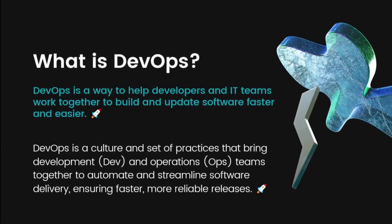First, let us learn what is DevOps. The simple definition of DevOps could be: DevOps is a way to help the developers and IT team members to work together and build and update their softwares faster and in an easy way. Now, as a software engineer, why do we need to learn DevOps?